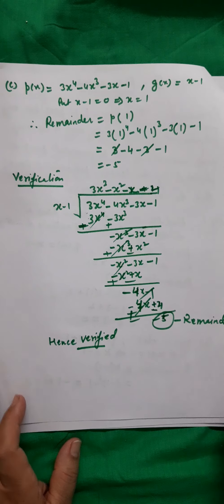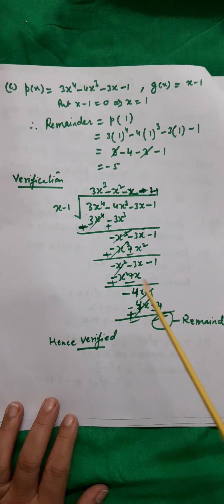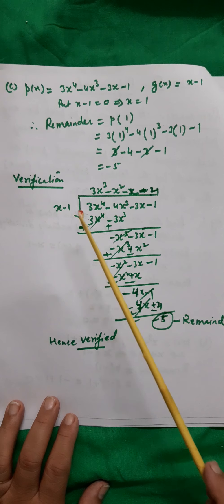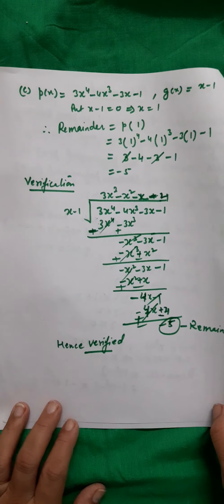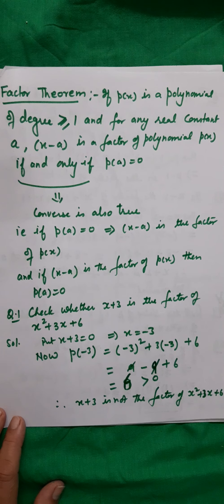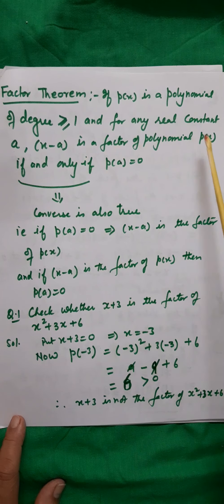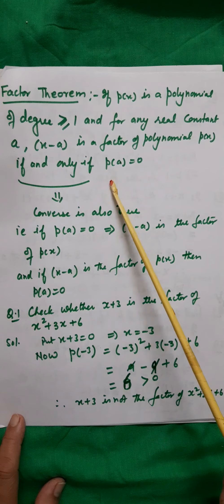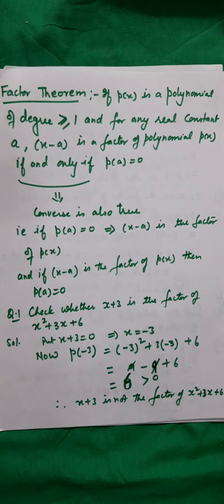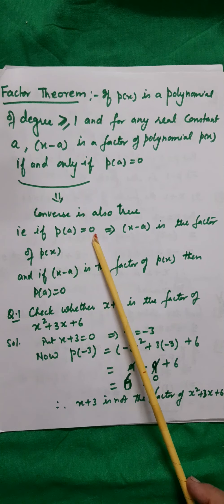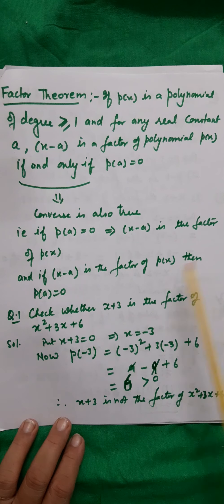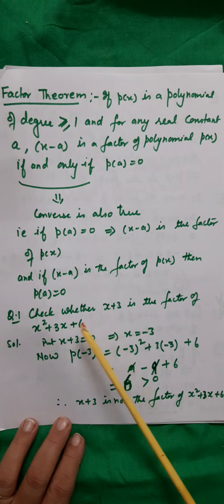If the remainder comes out to be 0, we say the divisor is a factor of the given polynomial; if not 0, it is not a factor. This leads to the factor theorem: if p(x) is a polynomial of degree ≥ 1 and 'a' is any real constant, then (x − a) is a factor of p(x) if and only if p(a) = 0. The 'if and only if' means the converse is also true: p(a) = 0 implies (x − a) is a factor, and vice versa.